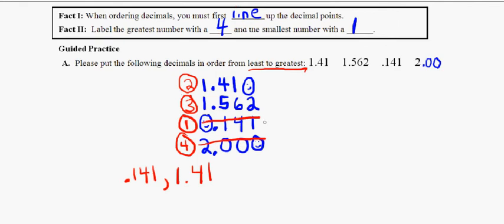Then, so the first one's done. The second one's done. Now the third, we have 1.562. No changes there. 1.562. And then finally, 2.000. But in the original, it just says 2. So we're going to write down 2. And that's how you put decimals in order from least to greatest or greatest to least.